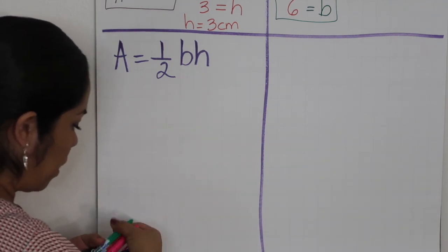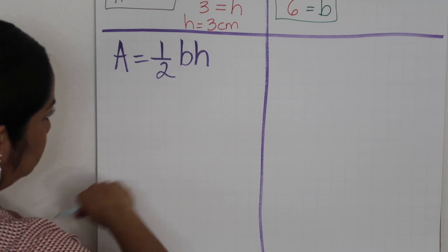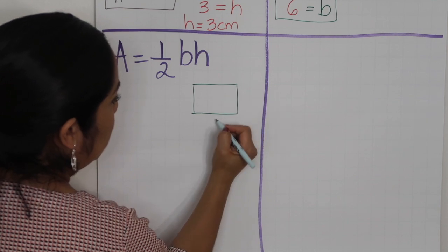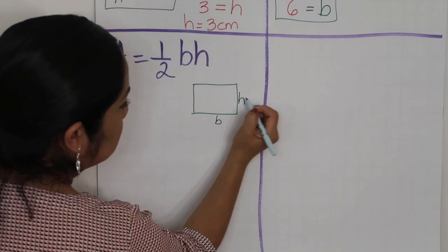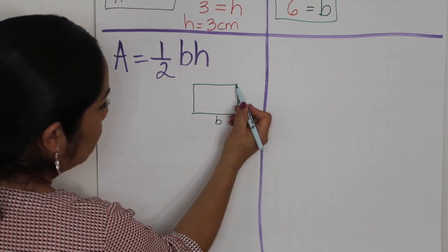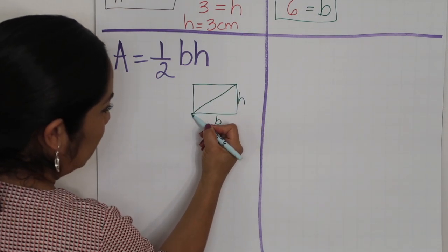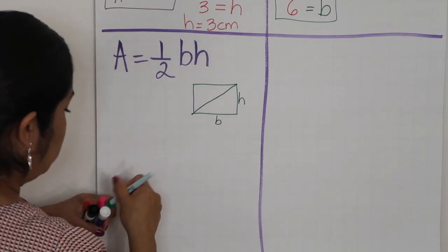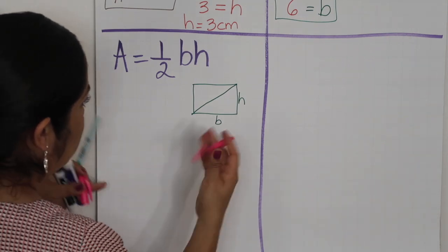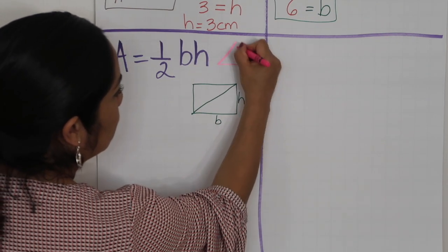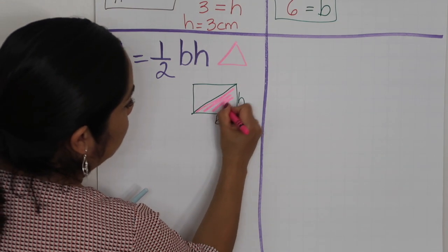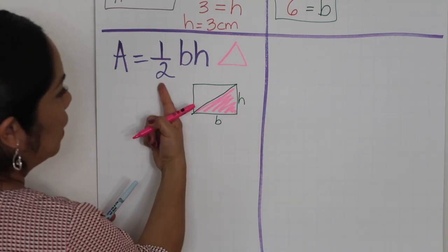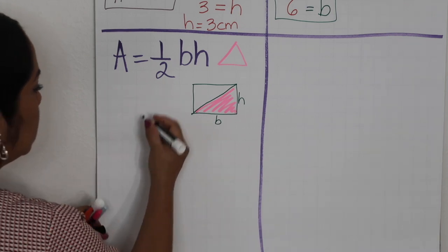Why do we have to divide by 2? Well, the area of a rectangle is base times height. For the triangle, we have to divide it by 2 — we have to split it to find that area. Since we're only trying to find the area of a triangle, which is one of those halves, we multiply the base times the height and then divide by 2.